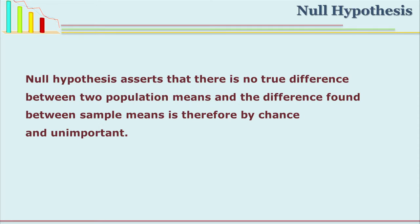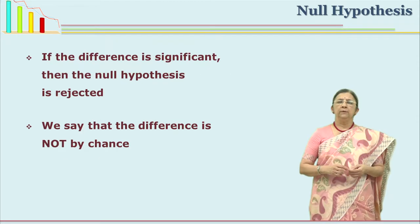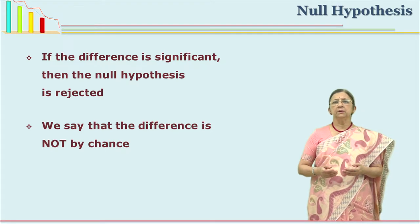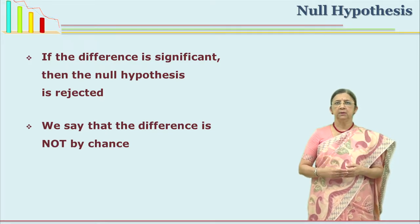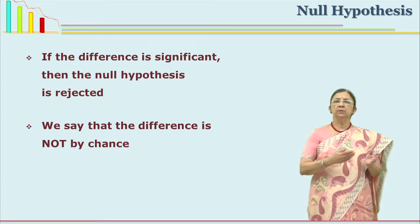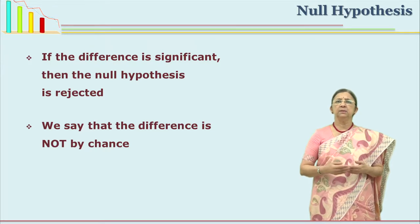When the researcher states there is no true difference, that means if a difference is found it is by chance, otherwise the researcher will confidently say there is really no true difference. If the difference between two means or two scores is significant, then the researcher rejects the null hypothesis because the difference is significant. So the original null hypothesis which stated there is no true difference has to be rejected.